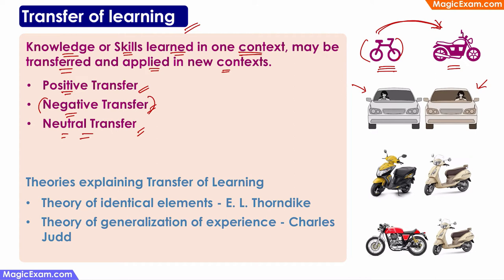Transfer of learning is explained by two main theories. E.L. Thorndike's theory of identical elements says that if I can drive a TVS scooter, I can also drive a Honda scooter because both are identical — same accelerator, same brake, similar appearance. Charles Judd's theory of generalization of experience says that in general, if there is a similarity between the previous and new situation, transfer of learning happens. For example, if I can ride a two-wheeler, I can ride any two-wheeler because there are many general similarities between them.